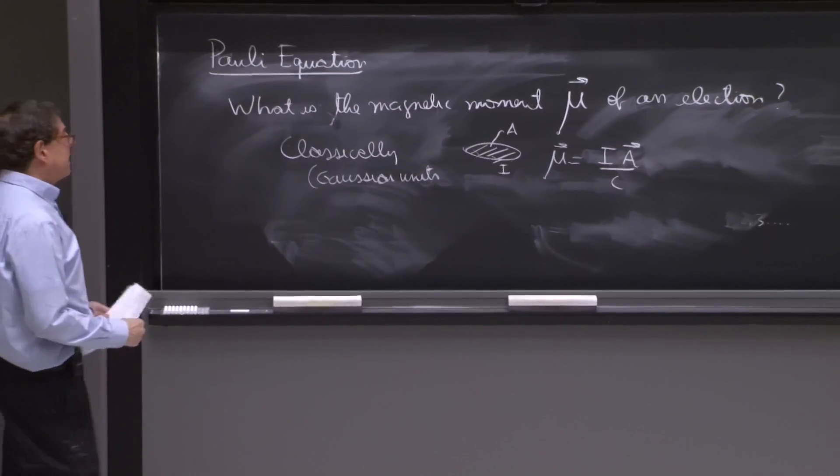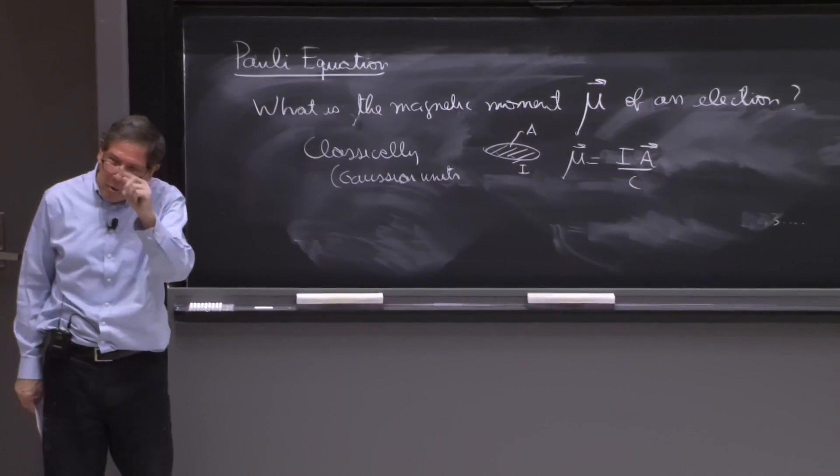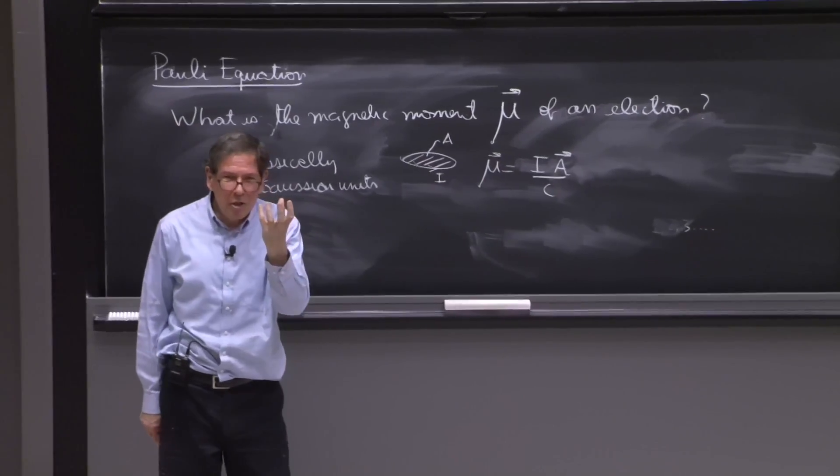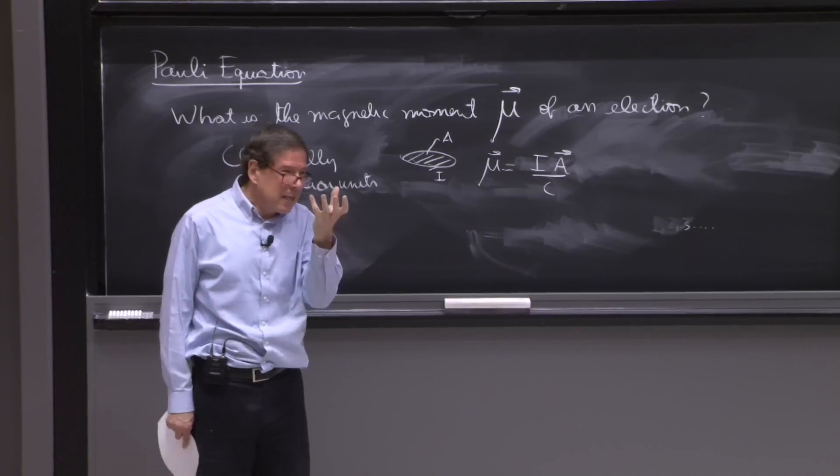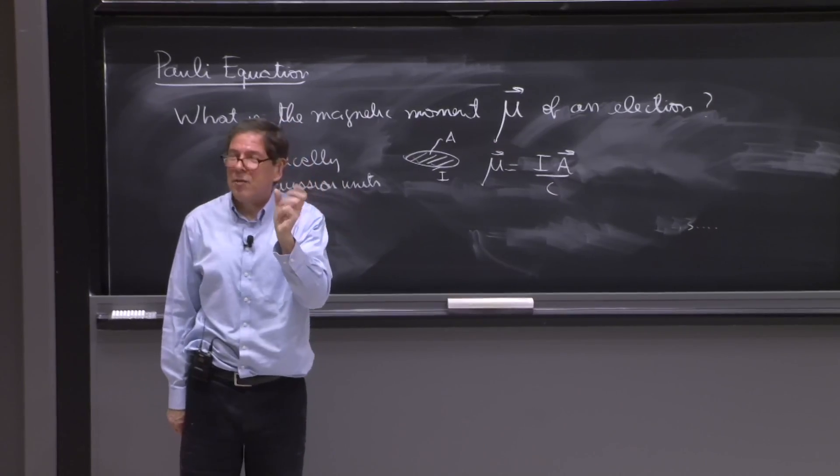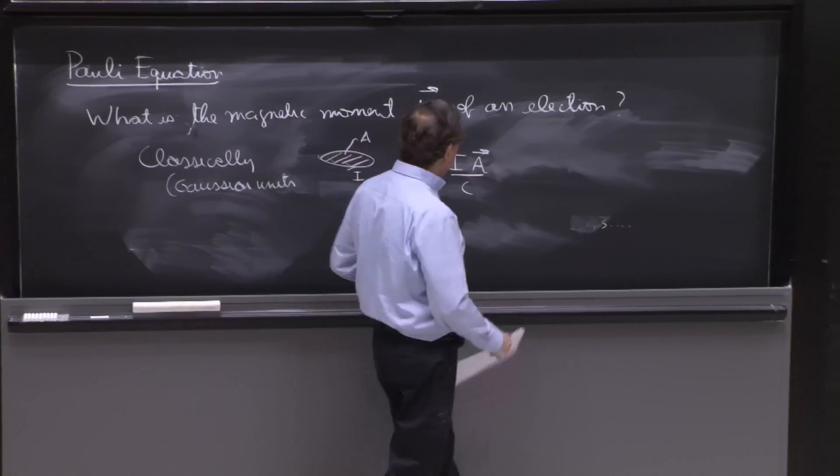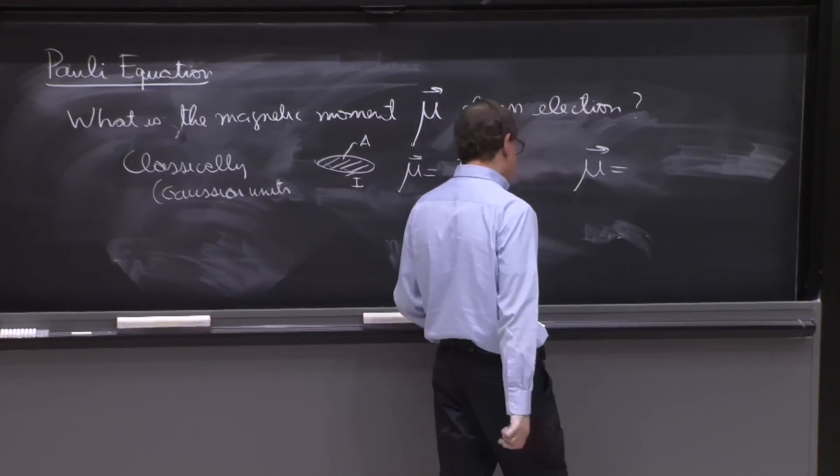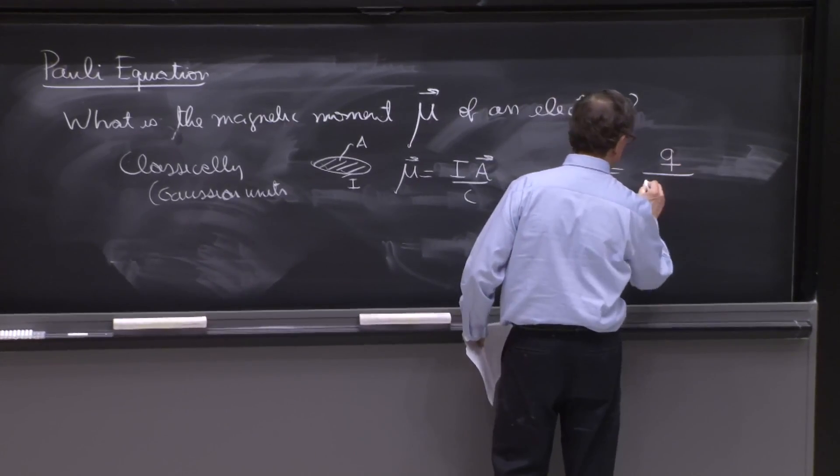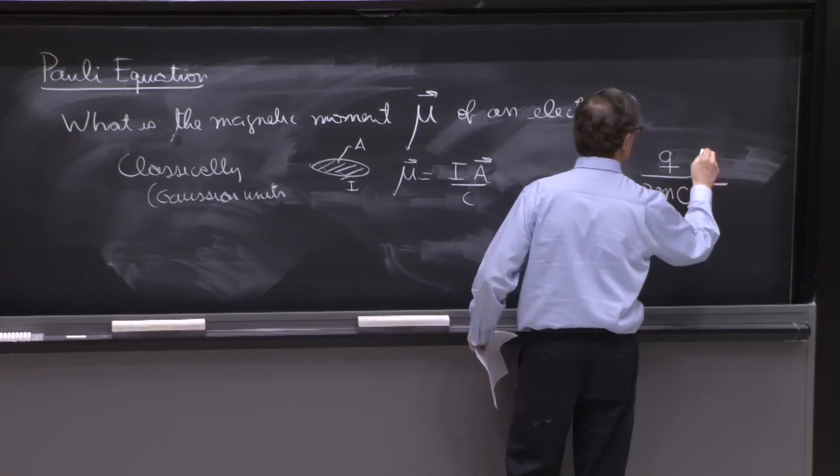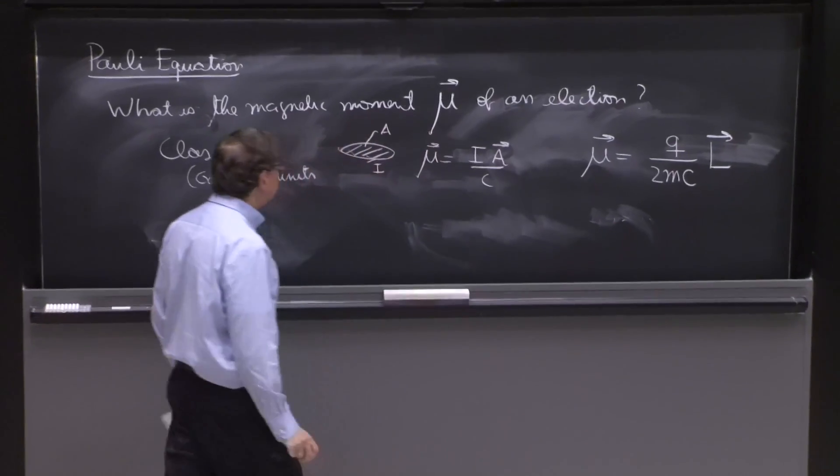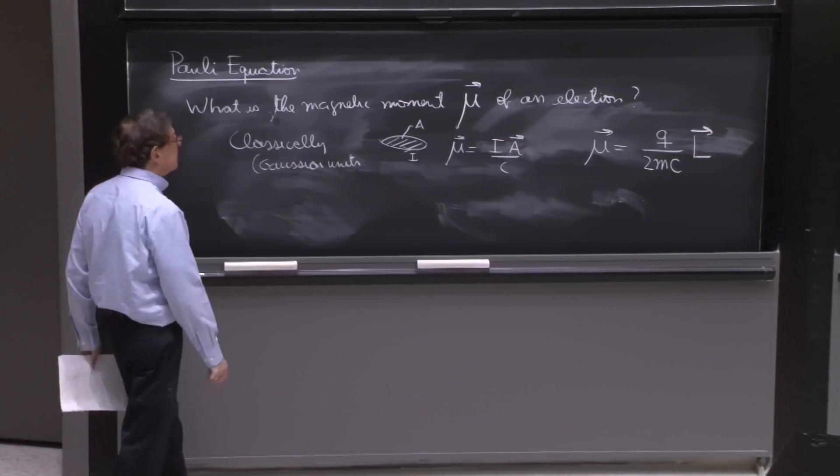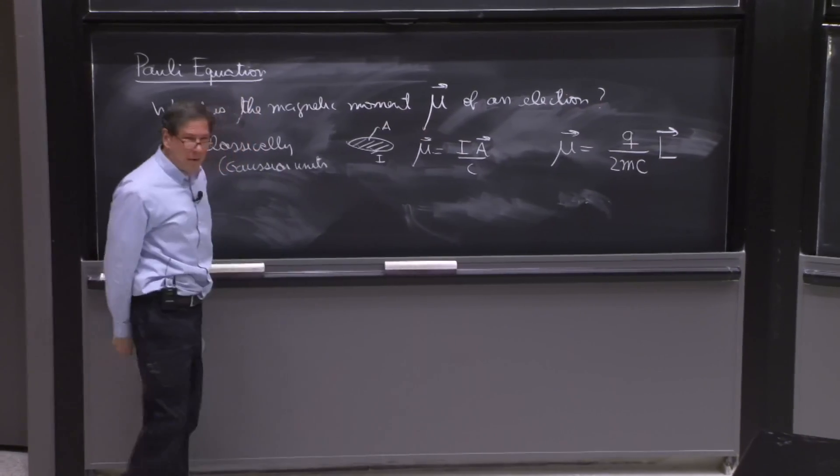You can use that to imagine an object that is rotating. And as the object rotates, if it's charged, it generates a magnetic moment. And the magnetic moment depends on the amount of rotation of the orbit. So it turns out that with a little classical argument, you can derive that the magnetic moment is related to the angular momentum by a relation of the form mu equals q over 2mc times L. So the charge of the object, the mass of the object, c, and the angular momentum. That's perfectly correct classically.